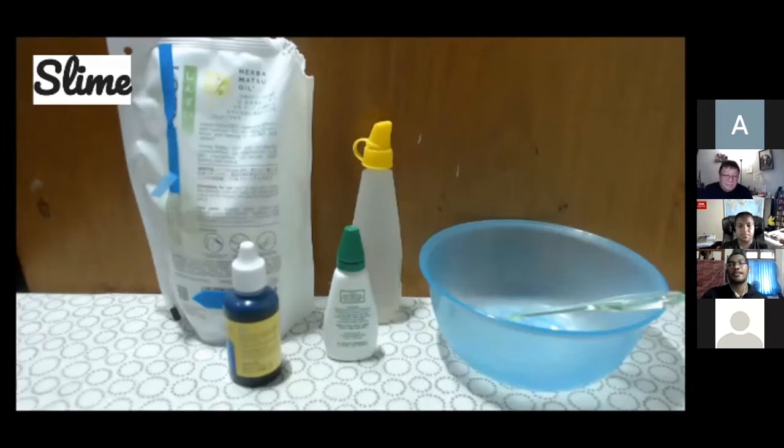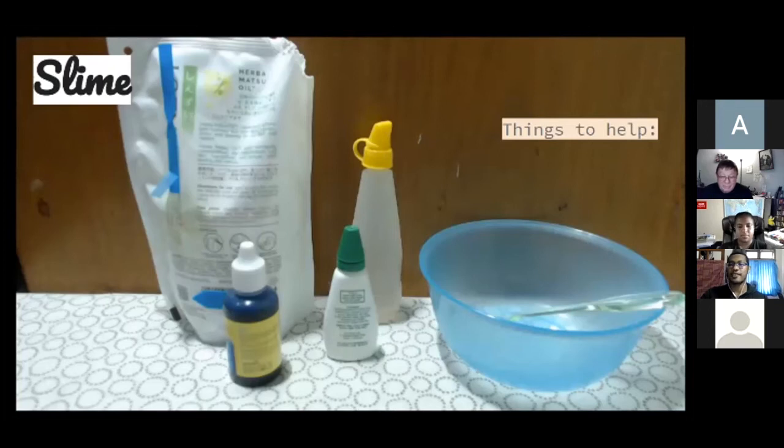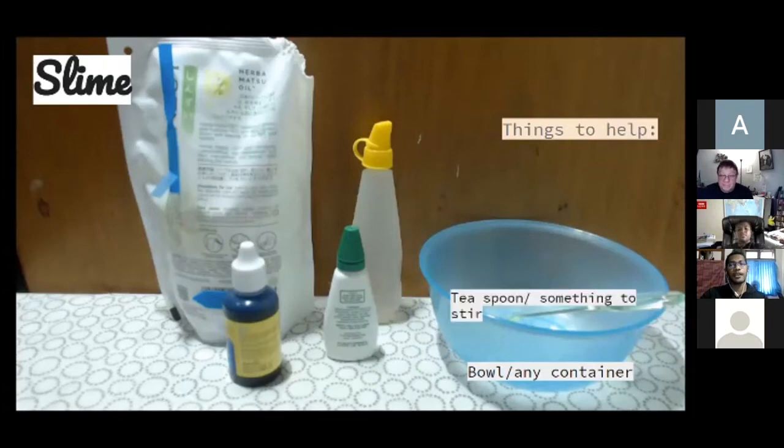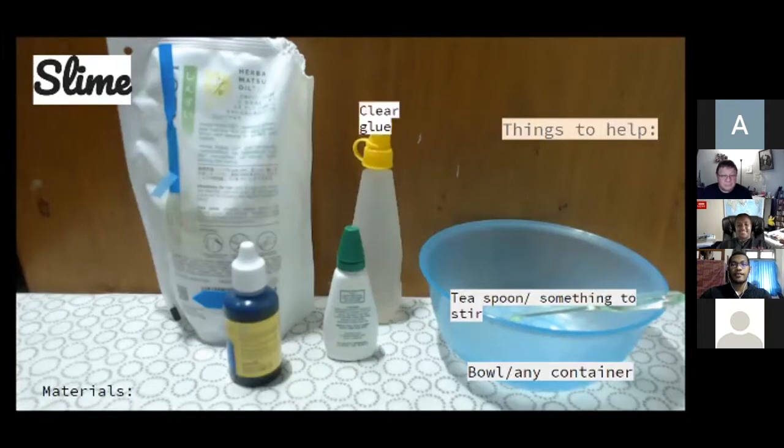Before we make our slime, there are some things that we need. First, things that we need to help us mix the slime: a bowl or any other container that we can use to pour in the mixture, and then a teaspoon or something to stir that we can use to mix the slime better.